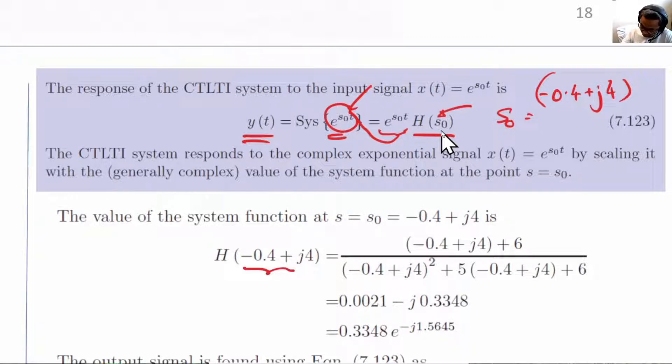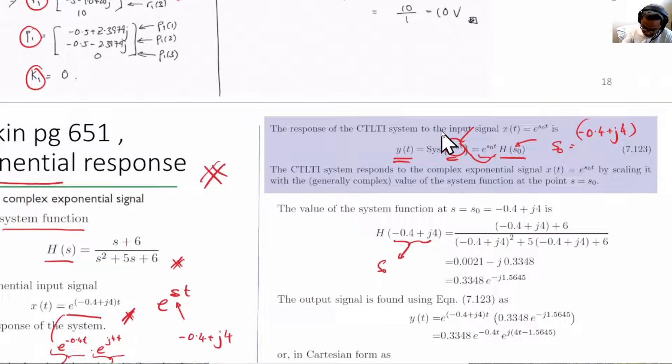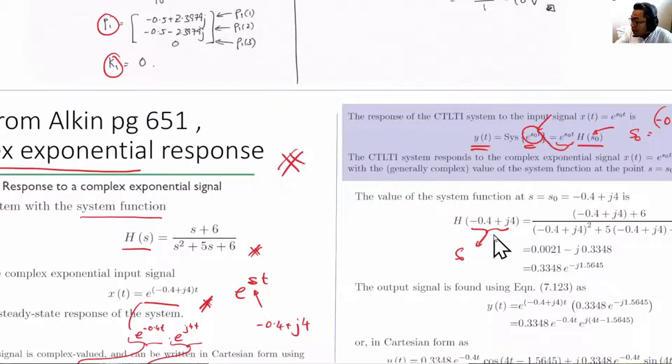This is s₀. s₀ came from exactly this expression here, e^(s₀t). So s₀ is equal to minus 0.4 plus j4.